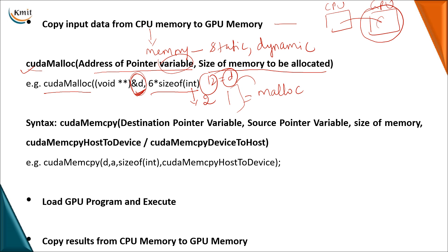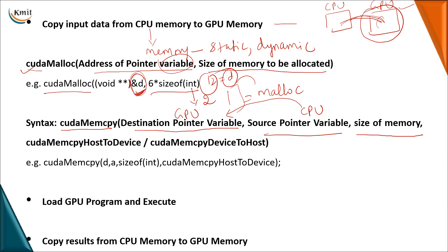Once memory is created in the CPU with data and an empty memory is created in the GPU, the next step is to transfer data from CPU to GPU using cudaMemcpy. It takes a destination pointer (GPU variable), a source pointer (CPU variable), the amount of memory to copy, and a direction flag. Specifying cudaMemcpyHostToDevice means copying from CPU to GPU. To transfer in the reverse direction — GPU to CPU for output — you use the same function with cudaMemcpyDeviceToHost as the last argument.